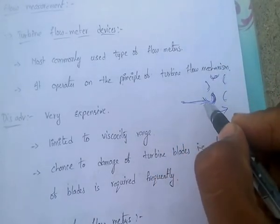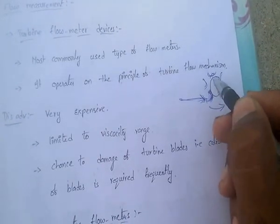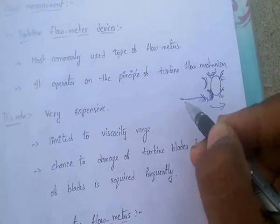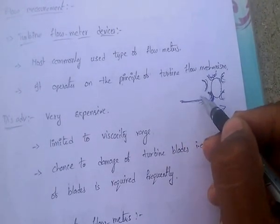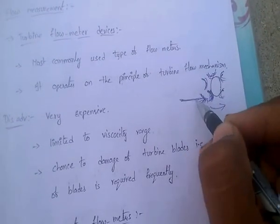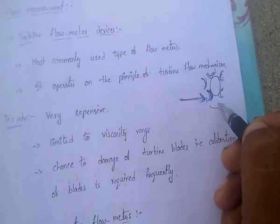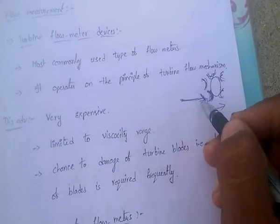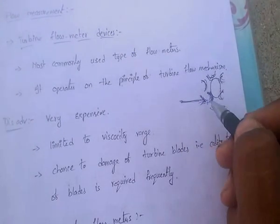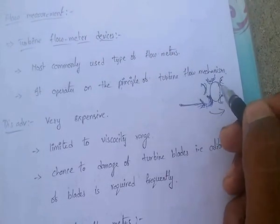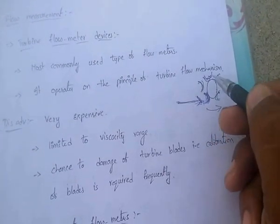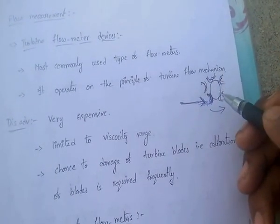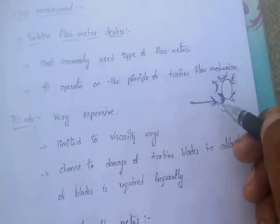In the turbine flow mechanism, whenever water or any fluid flow strikes the buckets or blades of the turbine with some force, the blades move and rotate. As each bucket is struck by the fluid flow, the turbine rotates continuously. This rotation is then connected to external meters, through which calculations allow you to find the flow rate of any fluid.